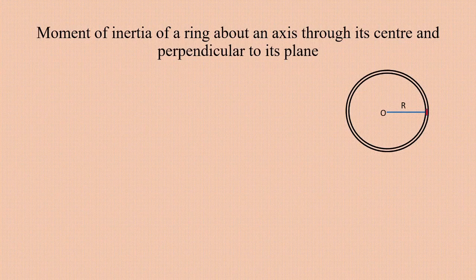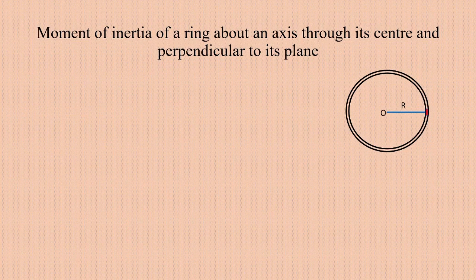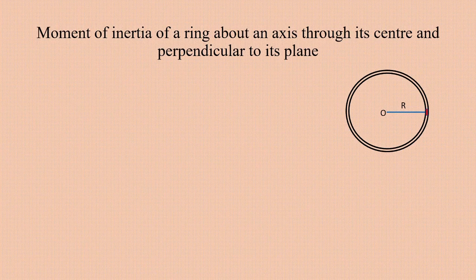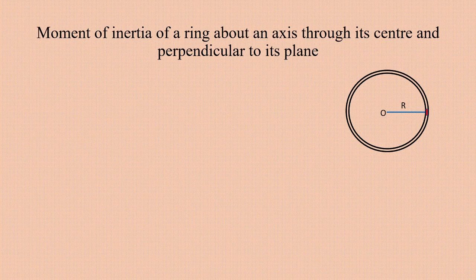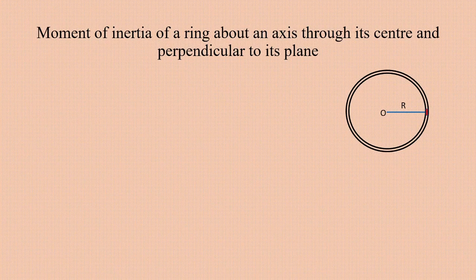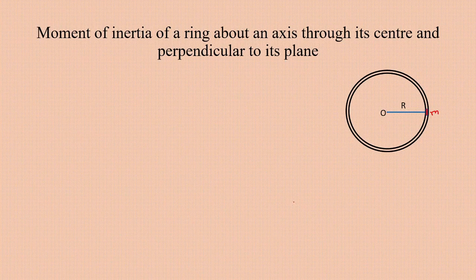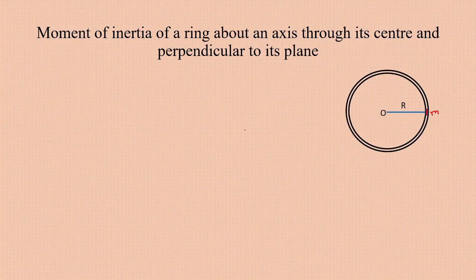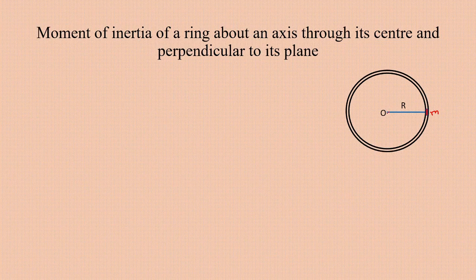To find the moment of inertia of this ring, we first find the moment of inertia of a very small length element. We divide the ring into very small elements and consider a small element of mass m. The moment of inertia of this small element about an axis passing through the center and perpendicular to the plane of the ring is m·R².